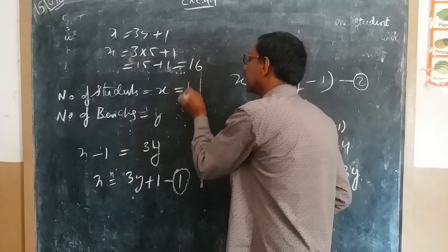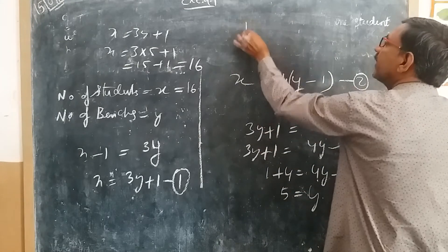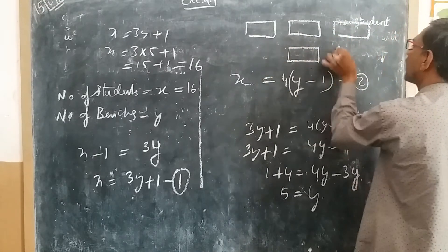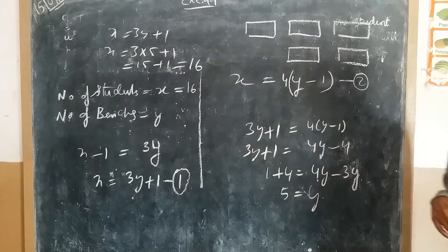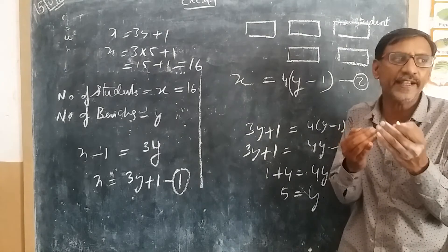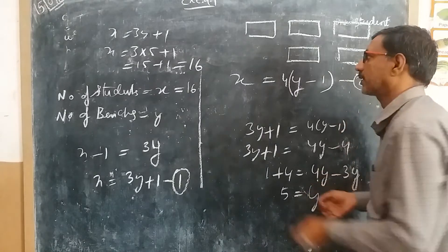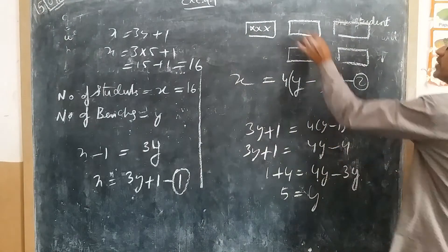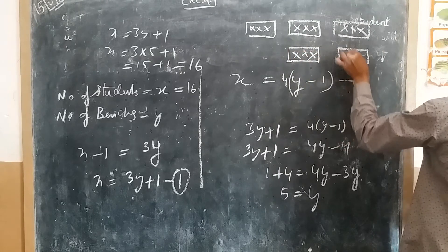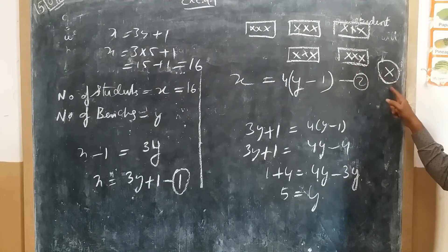Therefore the number of students is 16. Let's check: there are 5 benches. The first statement says if 3 students sit in each bench, one student will be left. With 5 benches and 3 students each, that's 15 students seated, and 1 student is left over — total 16. Correct!